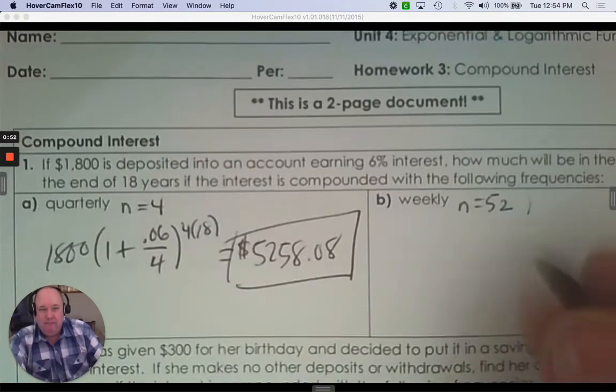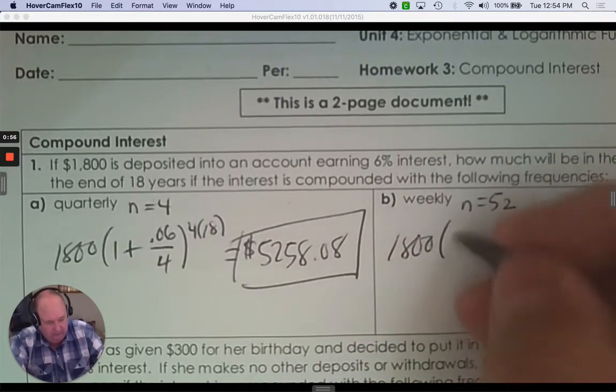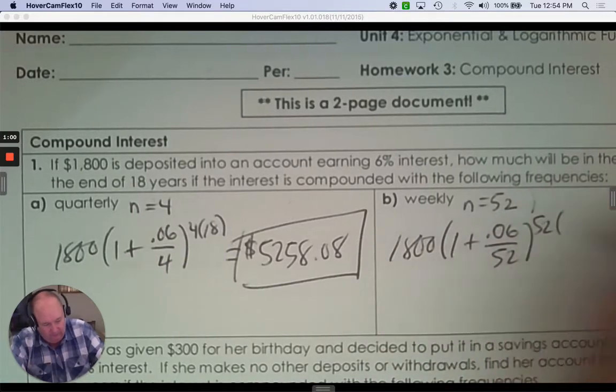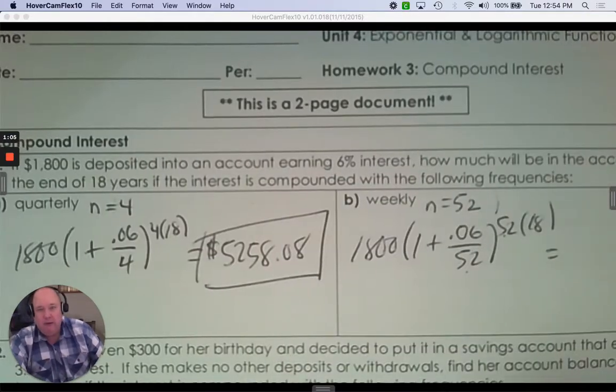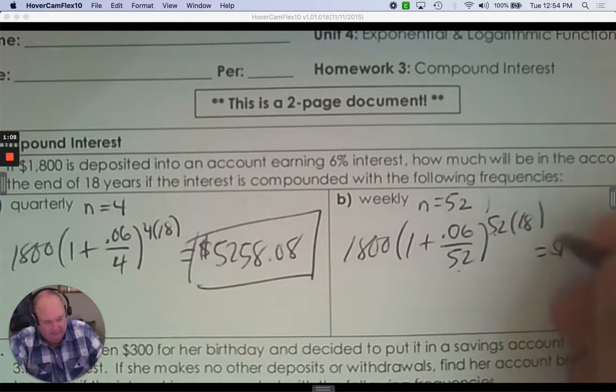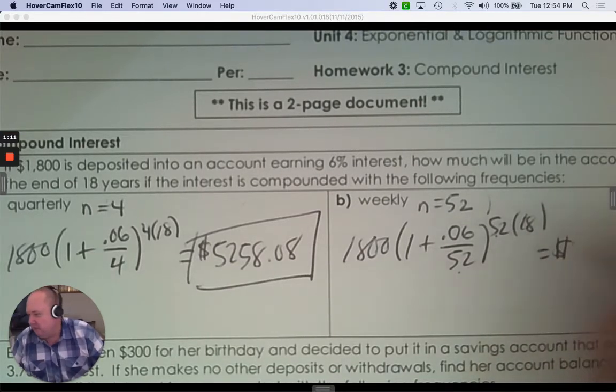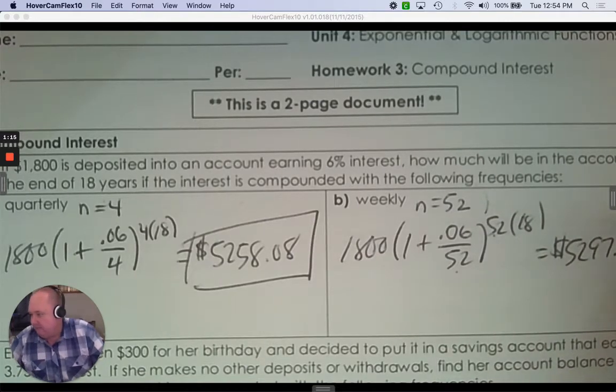If you compound it 52 times a year, it's almost the same setup. But the difference is it's going to be 52. So both here and here times 18. And how much more money would be in there now? Now you'd have $5,297.12.